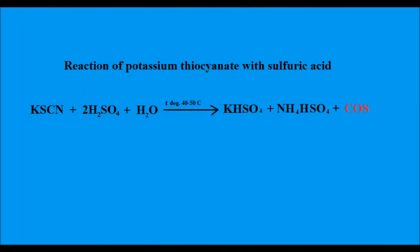Here's the reaction which I will perform today. It involves reacting one mole of potassium thiocyanate with two moles of sulfuric acid and one mole of water. I will be using 10 grams of potassium thiocyanate and approximately 80 milliliters of sulfuric acid, which is an excess.